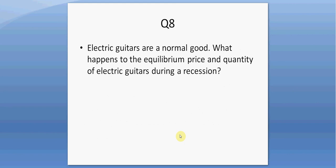Question eight. Electric guitars are a normal good. What happens to the equilibrium price and quantity of electric guitars during a recession? During a recession, income falls, wealth falls as people become unemployed. So the demand for normal goods will decrease, leading to a lower equilibrium price and lower equilibrium quantity.